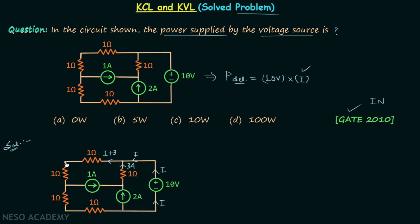This node here is a simple node — only two elements are connected here. At a simple node, no current division takes place. Therefore, the same current I plus 3 will flow through this resistor as well.